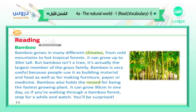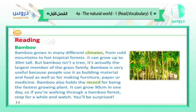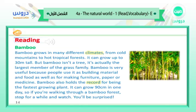Bamboo grows in many different climates, from cold mountains to hot tropical forests. It can grow up to 30 meters tall, but bamboo isn't a tree — it's actually the largest member of the grass family. Bamboo is very useful because people use it as building material and food, as well as for making furniture, paper, or medicine. Bamboo also holds the record for being the fastest growing plant — it can grow 90 centimeters in one day. So if you're walking through a bamboo forest, stop for a while and watch — you'll be surprised!